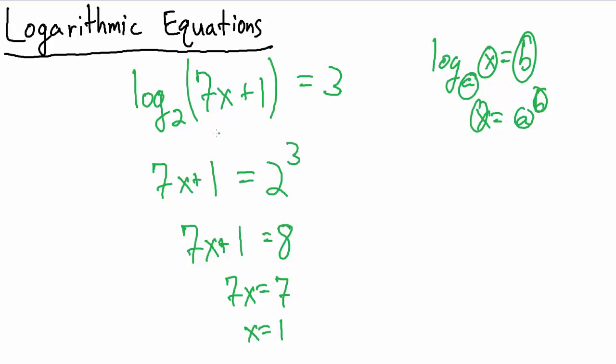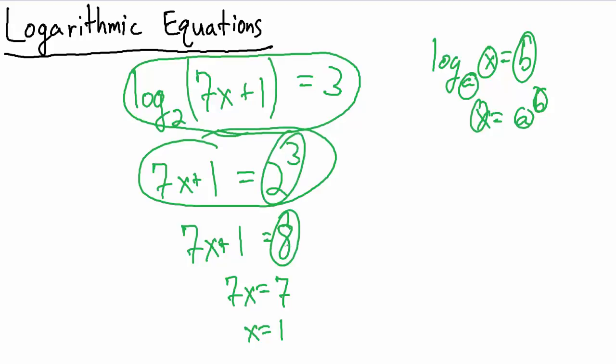So we see that even though this might look kind of complicated at first, once we convert it to its equivalent exponential form and then simplify ever so slightly, we actually get a pretty simple linear equation, and we end up with x equals 1 as our final answer. So when you're solving log equations like this, it's a really good idea to check your answer in the end.